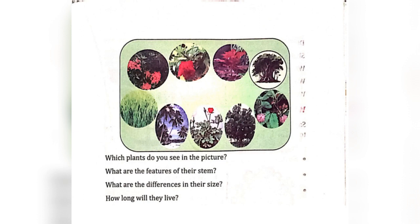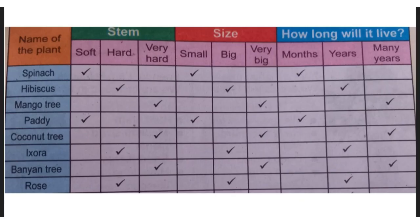Each plant has a different type of stem. They also differ in their sizes. Different plants live for different time durations. Now, let's complete the table.